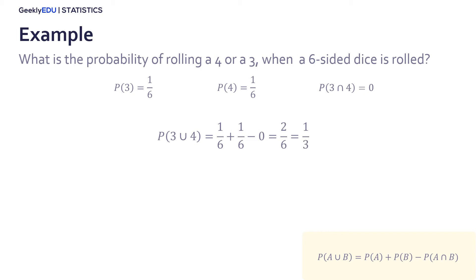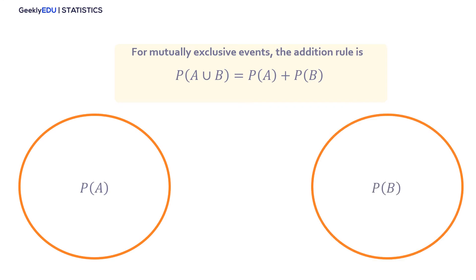This is a case of mutually exclusive events, and we can use a formula for these cases, where the probability of union A and B are the addition of probabilities of A and B. If we use the Venn diagram for the addition of mutually exclusive events, we can see that the simultaneous occurrence is equal to 0, and the probability A and probability B are represented again with a circle.